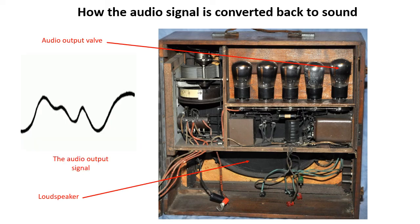The loudspeaker converts the audio output signal back into sound so that it can be heard by the listener. The loudspeaker works in the opposite way to a microphone. The audio output signal is passed through a coil near a magnet. The coil is connected to a paper cone, and as the audio current that represents the sound passes through the coil, it moves the loudspeaker cone, which creates sound waves in the air which the listener can hear.